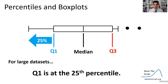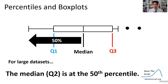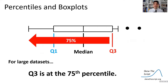Now let's look at percentiles and box plots for large data sets. Quartile 1 is at about the 25th percentile, Quartile 2 (the median) is at the 50th percentile, and Quartile 3 is at the 75th percentile. This makes sense when you think of quartiles as quarters.